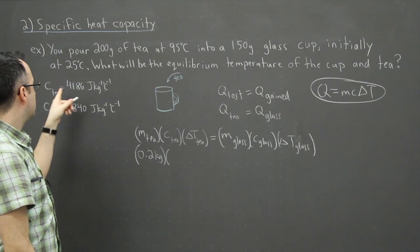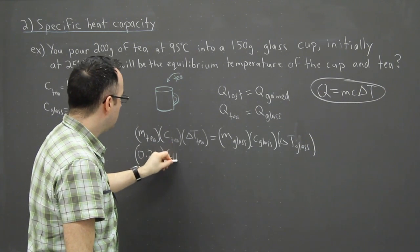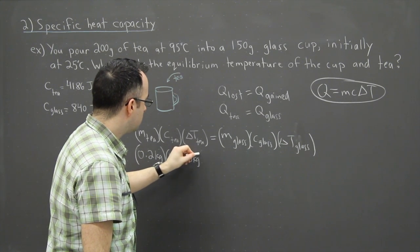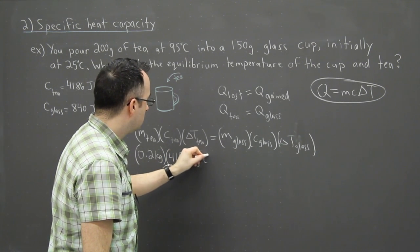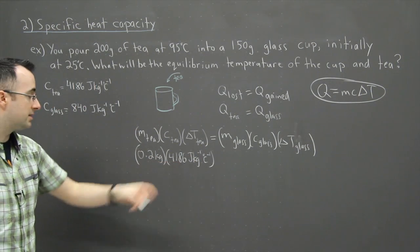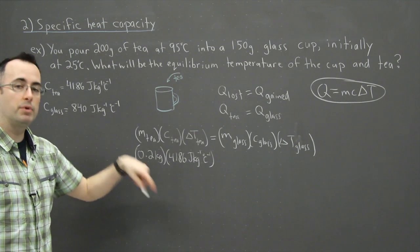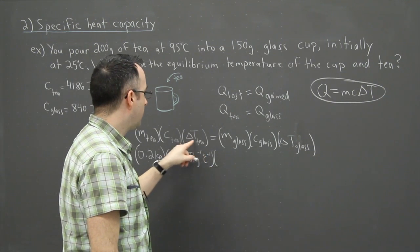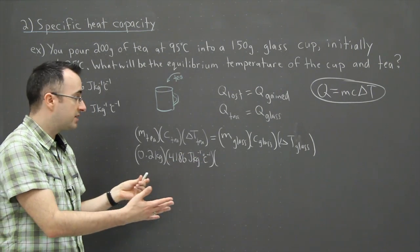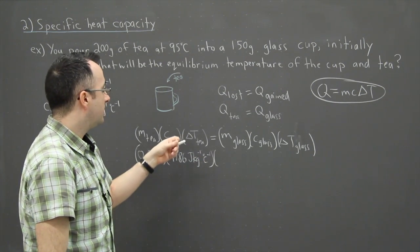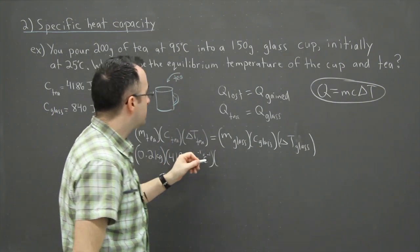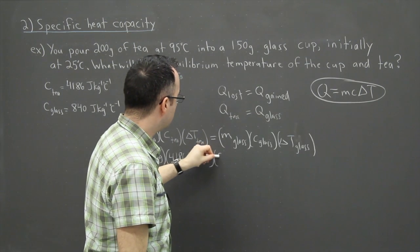Times C of the T, the specific heat capacity. I've actually just used the specific heat capacity of water because the T itself will not really change the properties that much. So we have 4186 joules per kilogram per degree Celsius. All that times the change in temperature of the T. Now it's important here, here is where we've got something to calculate. The T itself is going to lose energy.